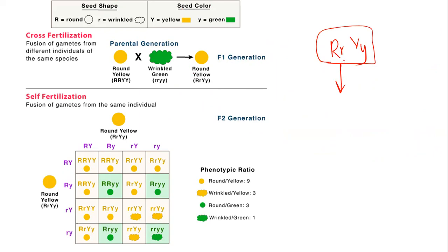It can be possible — round or wrinkled, round or green. These are the possible outcomes.